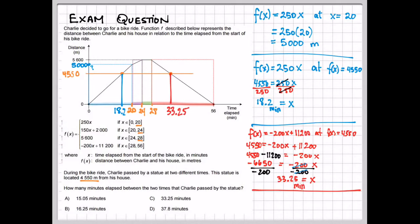Now we have the two times when he sees the statue. The first time is 18.2, and the second time is 33.25. To find the distance between these two times, or to find how much time has elapsed between these two times, we're going to do the difference between these two times. What we do is the big number minus the small number. 33.25 minus 18.2 is 15.05 minutes.